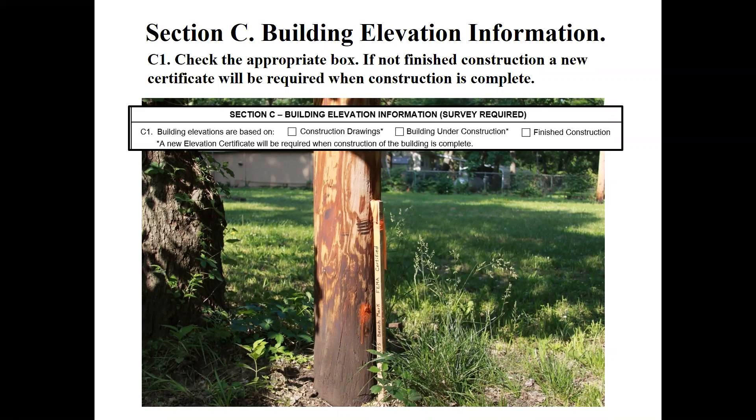Here's Section C1 of the form. You can do an elevation certificate based on construction drawings, a building under construction, or finished construction. Almost every community in Kansas requires an elevation certificate when construction is complete to make sure it was done right. Some communities will ask for one before issuing a permit — based on construction drawings — to verify that what is going to be built will be built correctly.